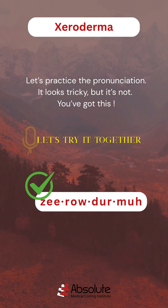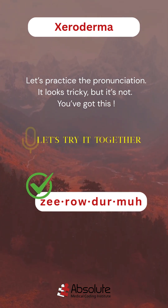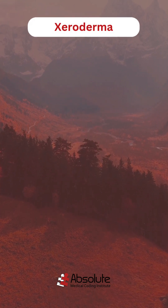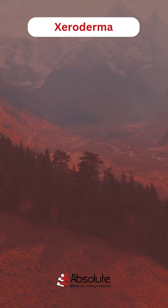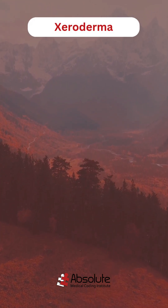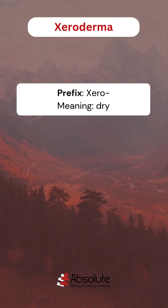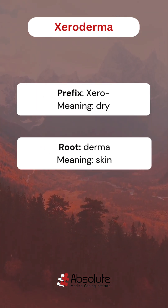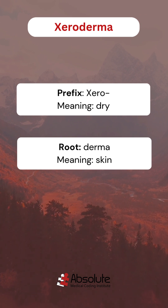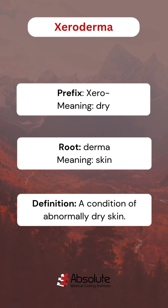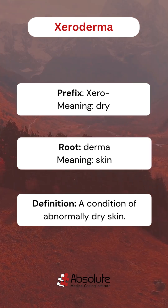Now let's see what the word parts mean and break down the word. The prefix is 'xero,' which means dry. The root word is 'derma,' from Greek derma, meaning skin. When you combine the prefix and the root word, you get the definition: a condition of abnormally dry skin.